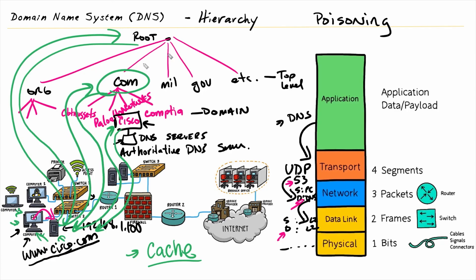We'll save the security and hacking discussions for another set of videos, but I wanted to point out the overall big process regarding name resolution on the internet today. In the Domain Name System, in DNS, there are lots of different types of records based on the type of device we're looking for — maybe an email server, a name server, an IPv4 address, or an IPv6 address. In DNS, each of those types of addresses has a specific record type. In the next video, I'd like to chat about what some of those record types are in the world of DNS.